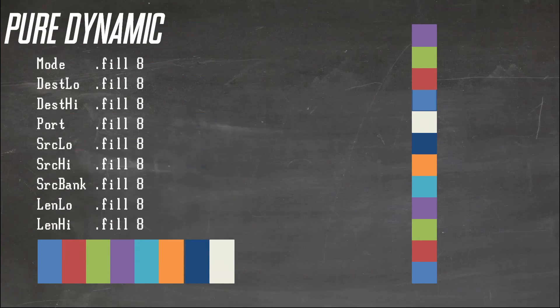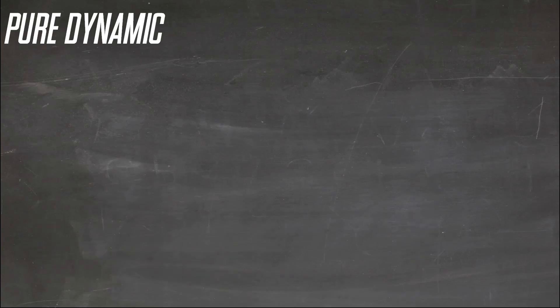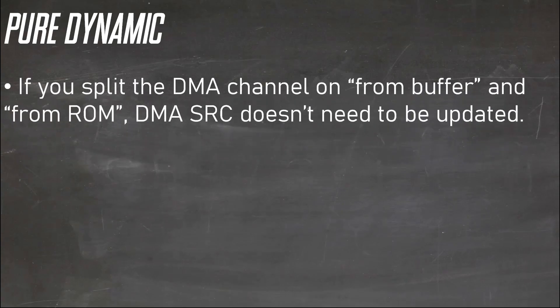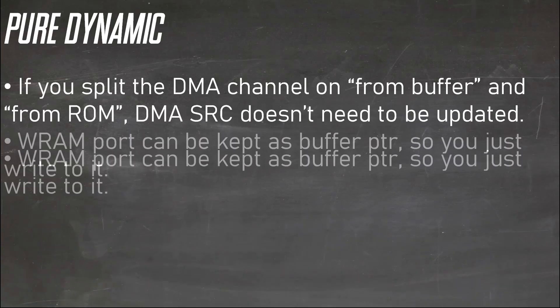such that each field of the structure has its own stack accessed by the same head number — i.e. mode, fill 8, dest fill 8, etc. — and then you index to store them to the registers with a single INX or INY. If you have from-buffer and from-ROM sources, you can use different channels for them. This way the from-buffer source pointer doesn't need to be updated as the hardware will increment it for you.